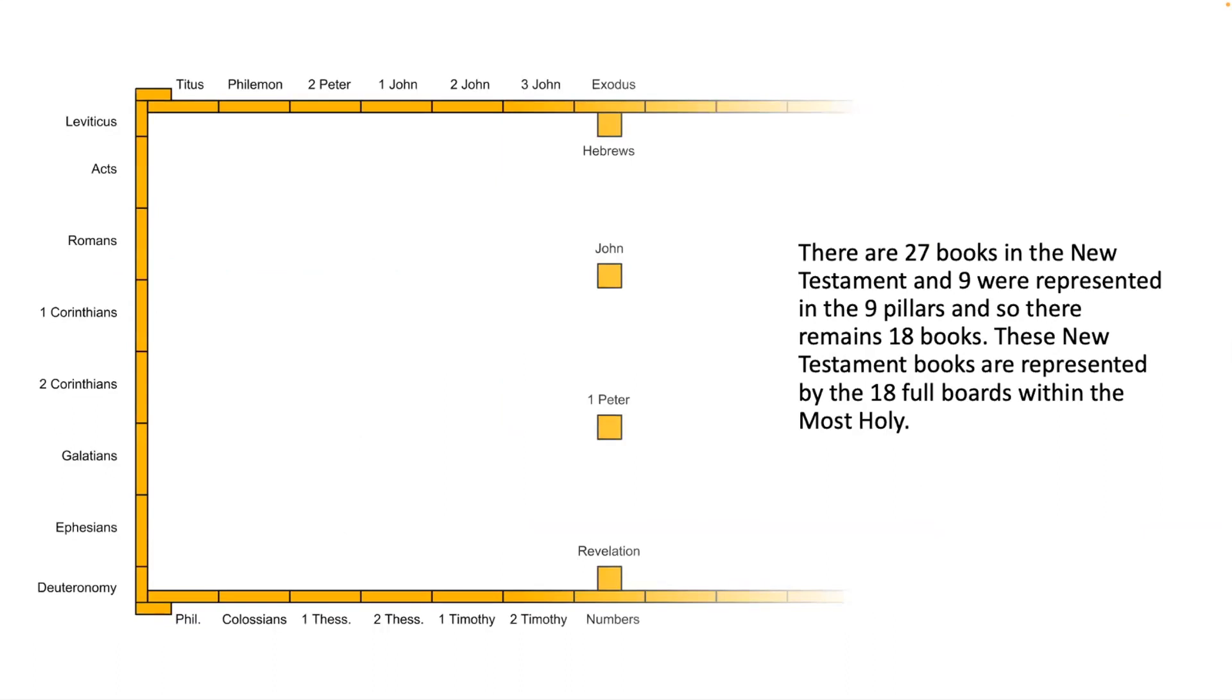There are twenty-seven books in the New Testament, and nine were represented in the nine pillars. And so there remain eighteen books. These New Testament books are represented by the eighteen full boards within the Most Holy. And so you see here all of the books of the New Testament, plus the five on the outside of the Holy.